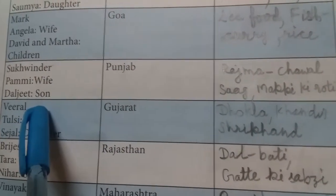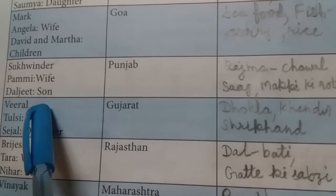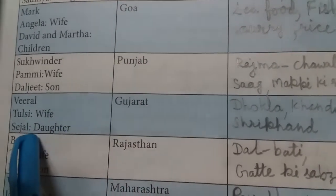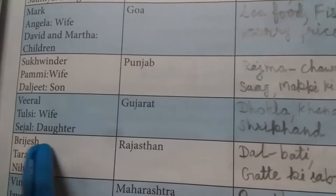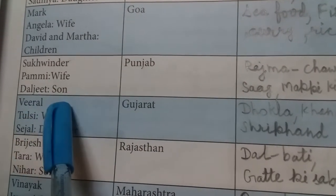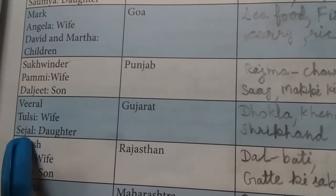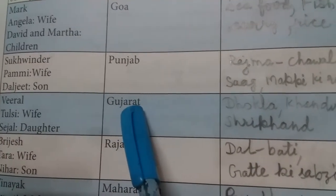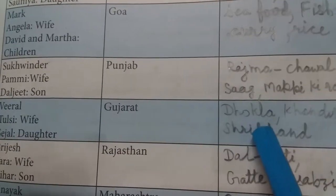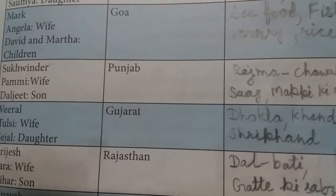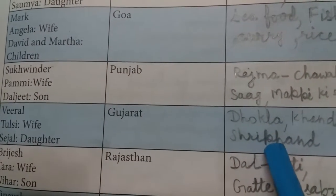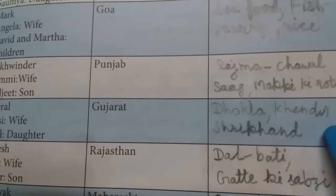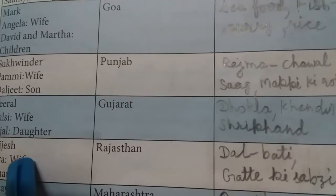The next family: husband's name is Viral, wife's name is Tulsi, and daughter's name is Sejal. They belong to Gujarat. Their favorite food is Dhokla, Khandvi, and Shrikhand. Gujarat के लोग Shrikhand, Dhokla, और Khandvi खाना पसंद करते हैं।